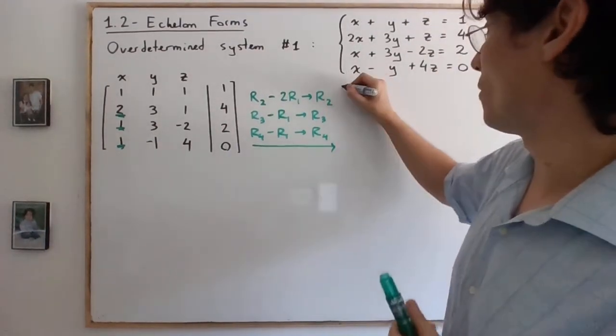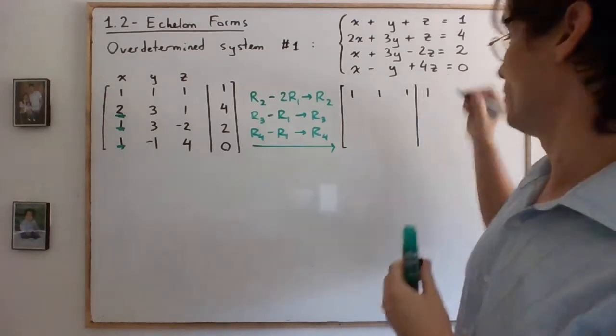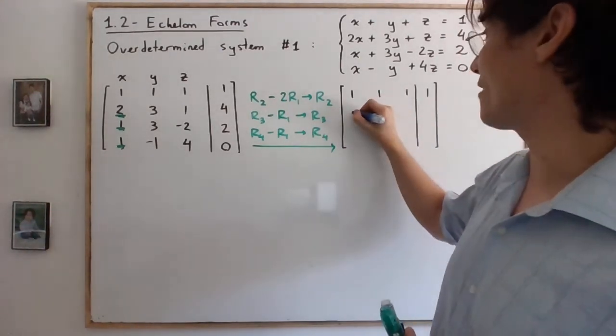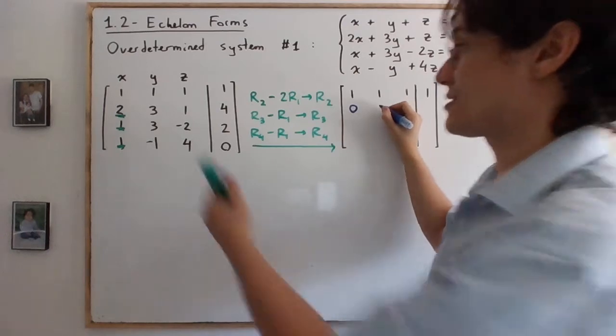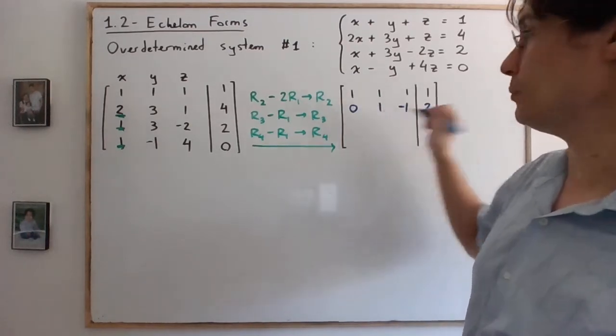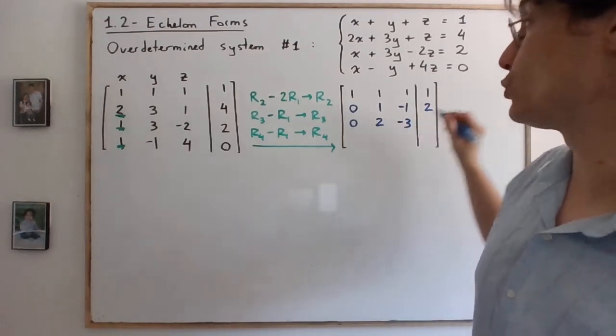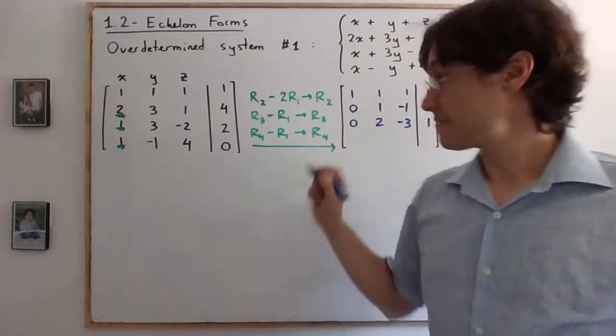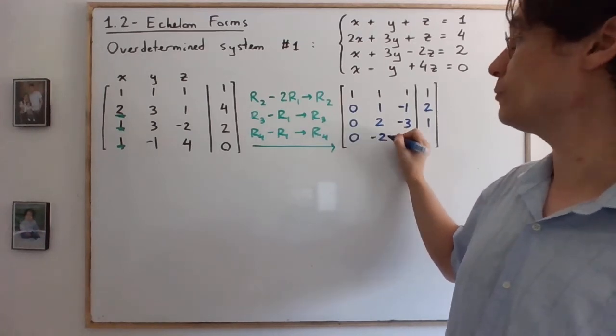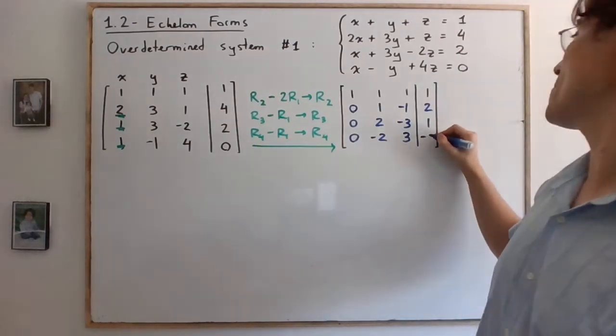Alright, so the first row is the unchanged row. The second, third and fourth rows all change. So here we have zero, and then we have to do the math. Three minus two is one, one minus two is negative one, four minus two is two. One minus one is zero, three minus one is two, negative two minus one is negative three, and two minus one is one. Finally, last row: one minus one is zero, negative one minus one is negative two, four minus one is three, and zero minus one is negative one.